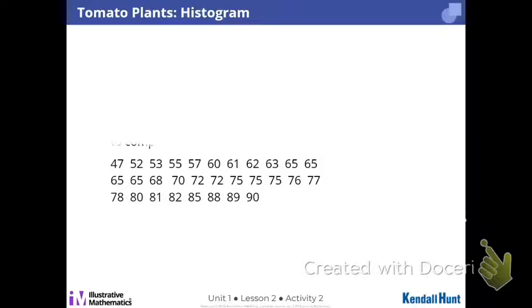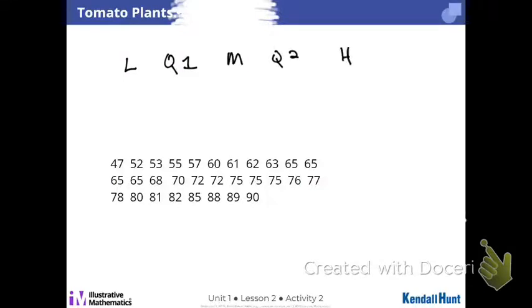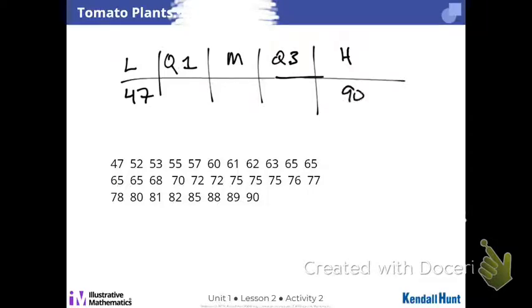So this says histogram, but we're going to do the box plot on here. For the box plot, we need this information. You're going to see something like a low, first quartile, median, third quartile, high. I put low and high because otherwise min and max is just M and M. So let's take care of the two hard ones. The low is 47 and the high is 90.